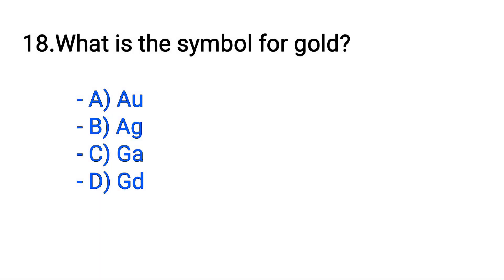Question number 18. What is the symbol for gold? Option A: Au. B: Ag. C: Ga. D: Gd. The correct answer is option A, Au.